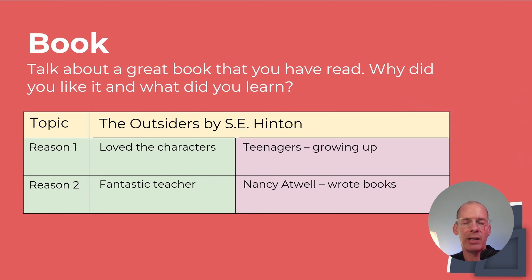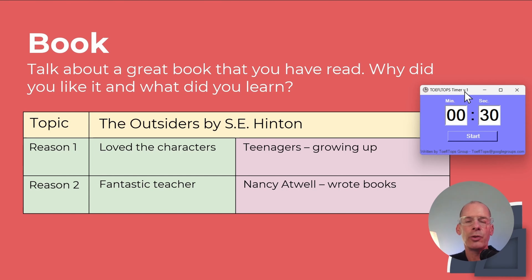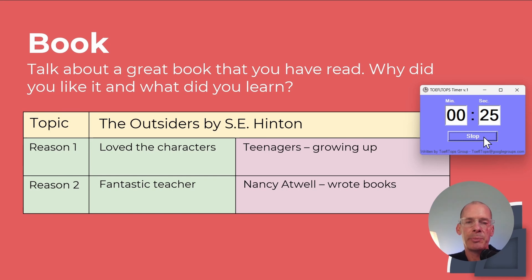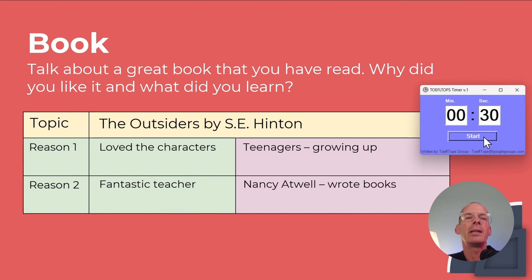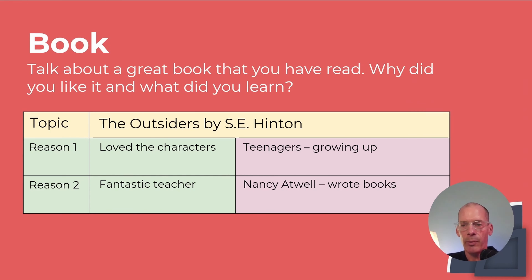Here's the Book question. Put a 30-second timer up and do it like this: I'd like to talk about a great book that I read, why I liked it, and what I learned from it. This book was called The Outsiders, written by S.E. Hinton when she was 15 years old. I remember reading it in elementary school. One reason I loved it is the characters were very great and memorable — they were teenagers, and it was a book about growing up. Another reason is that I had a fantastic teacher named Nancy Atwell, who later wrote many books and opened a school. Practice it again and again until you perfect it.